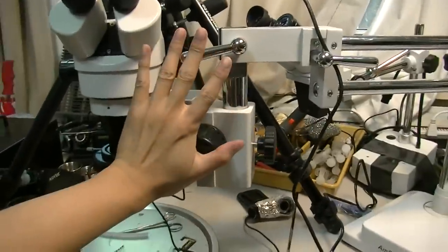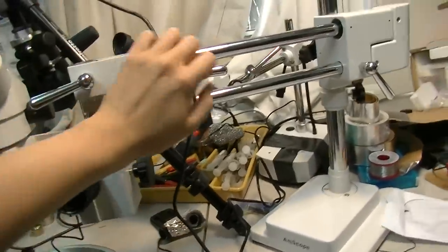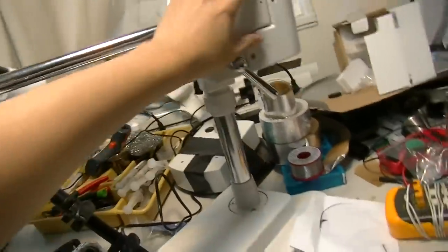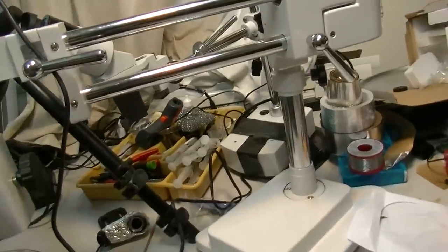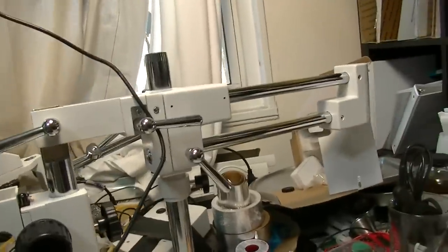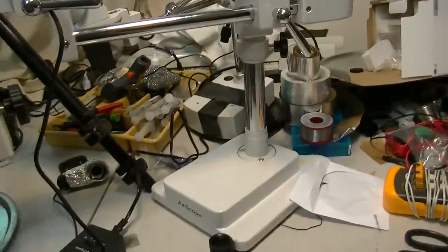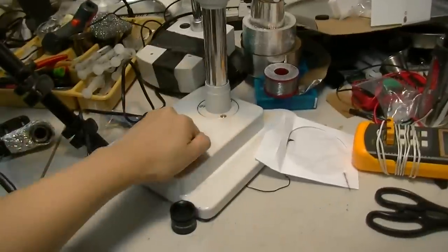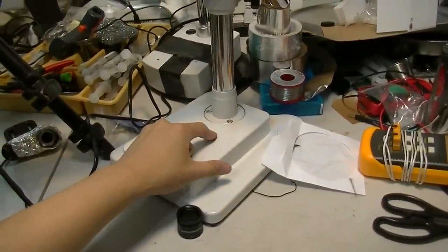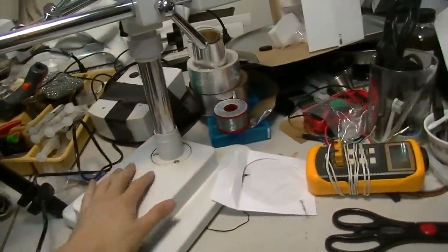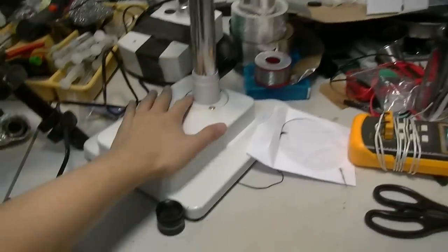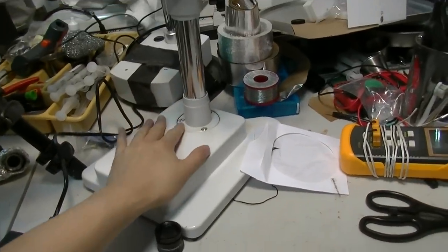As you can see, this is pretty big. My hand is this big, and all this is solid, solid iron, solid metal here. This is a counterweight. So you can slide this microscope back and forth without tilting over. This base is very heavy. Take my word for it, it's probably at least 20 to 30 pounds. It's heavy, just the base.